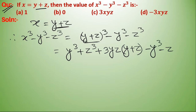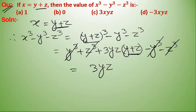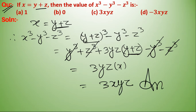Here y cubed and y cubed cancel, and z cubed and z cubed cancel, so we are left with 3yz. The value of y plus z is x, so the answer is 3xyz. Therefore option C is the correct answer.